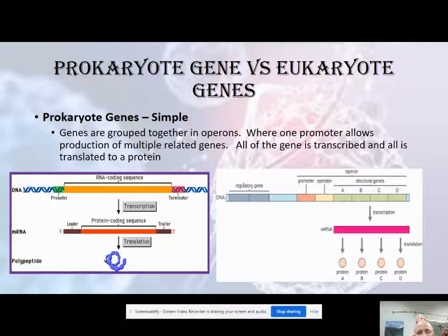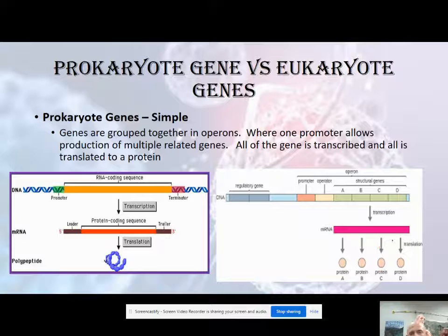In prokaryotes, genes are grouped together into something called an operon. For example, if a bacteria needs to break down lactose, we have a whole lac operon consisting of about four different genes, all right next to each other, but each one is actually a separate protein — A, B, C, and D — that form a working system within the bacteria, like the ability to break down lactose. You need a protein to import lactose through the cell membrane and one to break it down, like lactase.